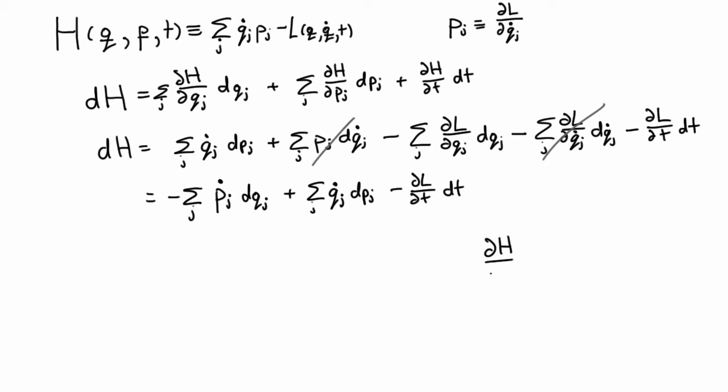And that means we immediately have the relations. We know that the derivative of the Hamiltonian, with respect to time, is equal and opposite to the derivative of the Lagrangian, with respect to time, explicitly. We also know that pj dot is just minus the derivative of the Hamiltonian, with respect to qj. And we know that qj dot is just the derivative of the Hamiltonian, with respect to pj.